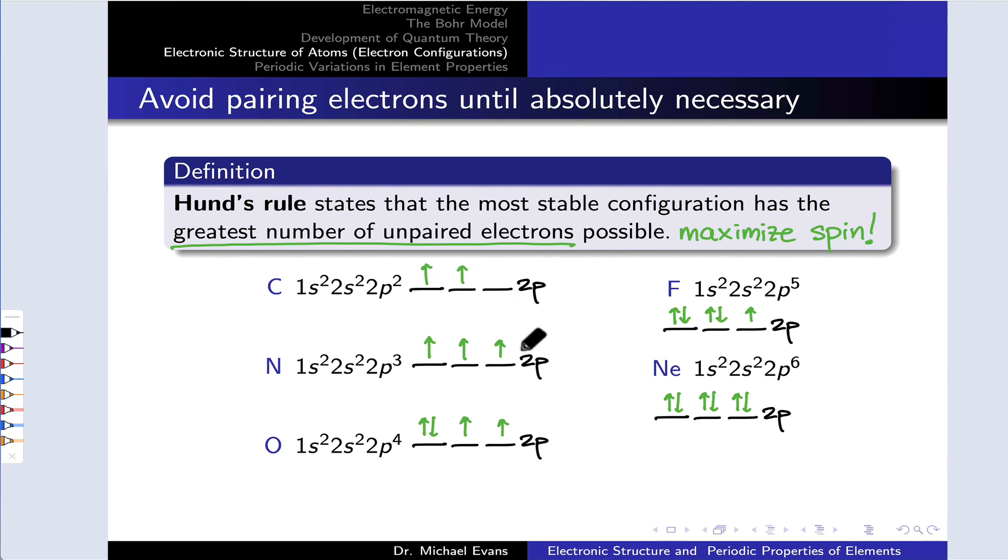For nitrogen, we continue that idea. We add that third electron into the remaining unfilled orbital to create three parallel spin electrons. For oxygen, we have no choice but to pair up, so we have to put a downspin electron in one of the three orbitals. Doesn't matter which one. Fluorine, we pair up again. And finally, at neon, all of the electrons in the 2P subshell are paired, and that subshell, and indeed the N equals 2 shell entirely, is completely full.